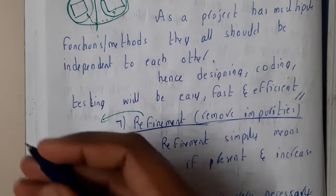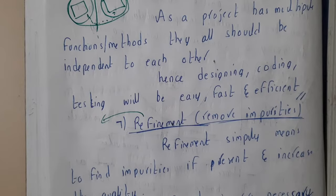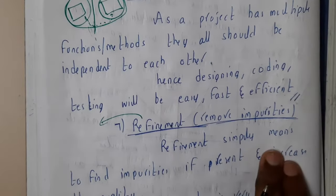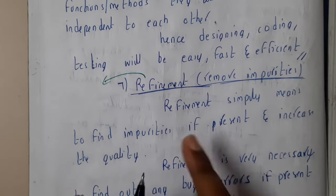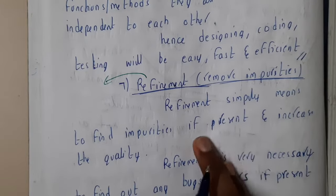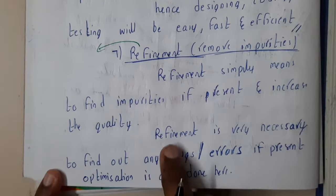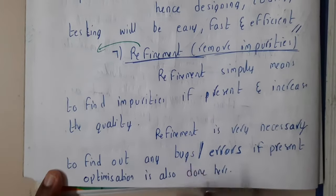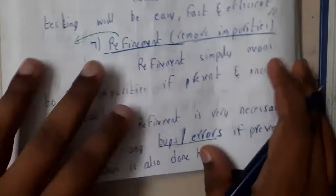Refinement — when you hear this, think of crude oil refining where impurities are removed. Here, we call the impurities bugs or errors. Refinement simply means to find the impurities if present and increase quality. It is very necessary to find any bugs or errors, and if present, optimization is done through this process.